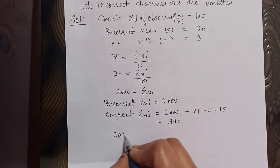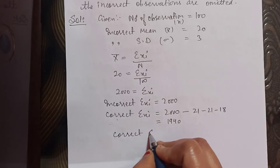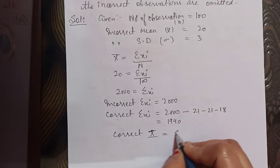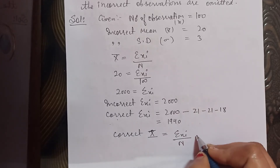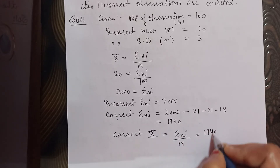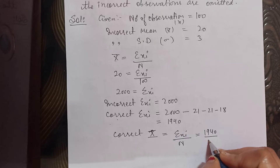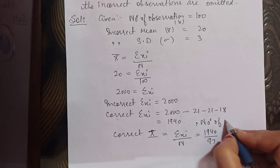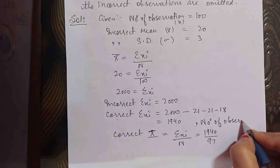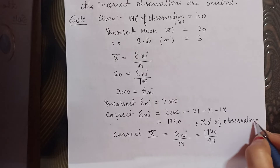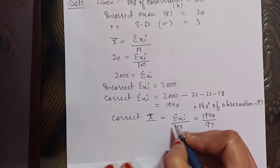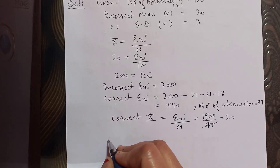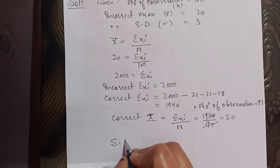So correct Σxi = 1940. Now we find the correct mean. Correct mean = correct Σxi / correct N. Since 3 terms are removed, correct N = 100 − 3 = 97. So correct mean = 1940 / 97 = 20.